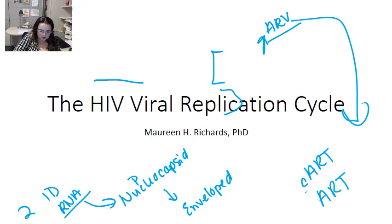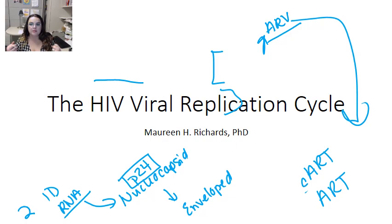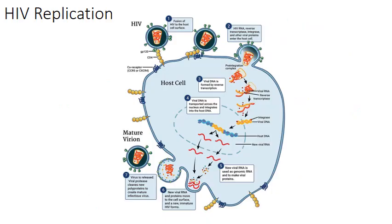The RNA is protected by a capsid structure — this nucleocapsid — and that's where you're going to find the HIV P24, which is a protein you may hear mentioned at other points in these videos, specifically when we get to diagnostic testing.